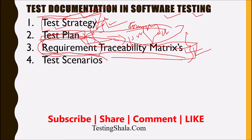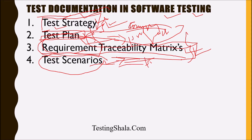The fourth important test documentation we create is test scenarios. Test scenarios are very high-level functionality written as single liners. Whenever we get a requirement or user story, we create high-level test scenarios or single liners to walk through with the PMs and POs, just to ensure that we are testing the appropriate features or scenarios, and then we can detail them out as part of the test cases.